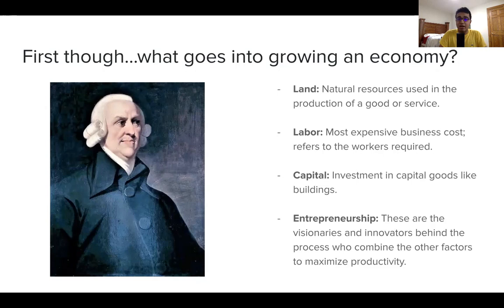The first factor is land — the natural resources used in the production of a good or service. To build a water bottle, for example, I need plastic, which is a byproduct of oil. So I have to consider how to access oil reserves. Or to build a wooden table, I need trees. Some countries just drew the luck of the draw and have much more available resources than others.